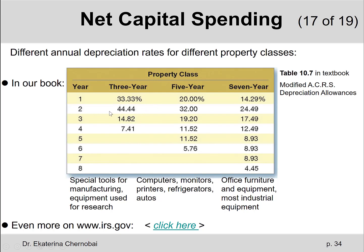The second year depreciation would be 44.44% of the same original book value. So if that was $10,000, then $4,444 is lost during the second year. This is how you calculate the depreciation for each year, one by one — it's not the same depreciation amount, which was the case with the straight-line depreciation method.